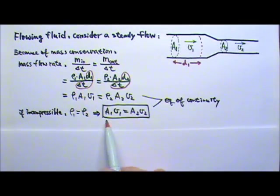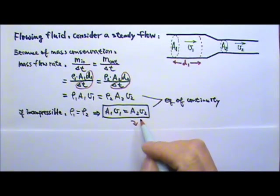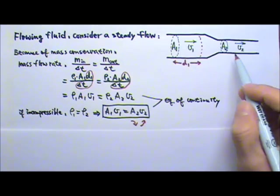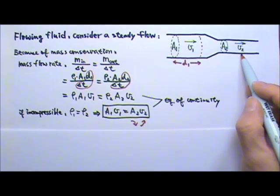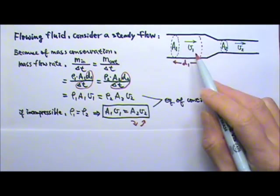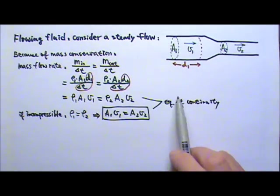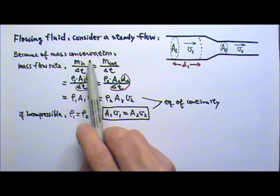The equation of continuity tells us that the cross-sectional area times the flow speed is a constant. The smaller the cross-sectional area, the bigger the flow speed. So if a2 is one-fifth of a1, then the flow speed v2 would have to be 5 times the v1. It is important for you to know that the equation of continuity comes from mass conservation.